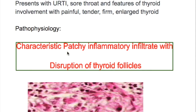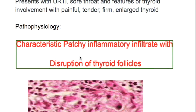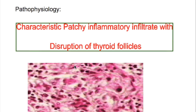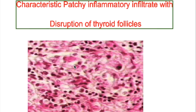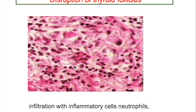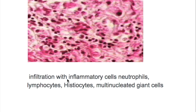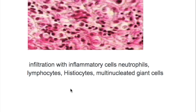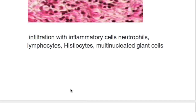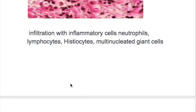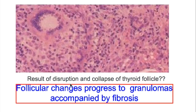What's the pathophysiology of De Quervain's thyroiditis? There is a characteristic patchy inflammatory infiltrate with disruption of thyroid follicles. Infiltration occurs with inflammatory cells like neutrophils, lymphocytes, histiocytes, and multinucleated giant cells.